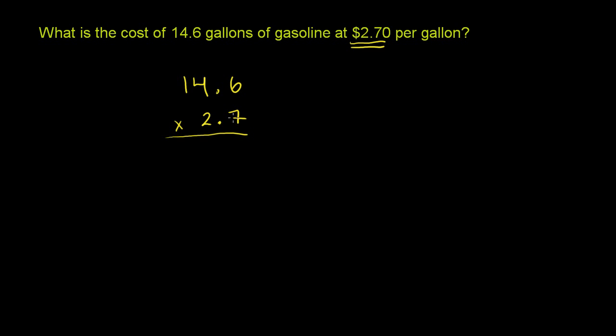So first we have, and just as a reminder, when you multiply decimals, you just have to treat the numbers like whole numbers and then worry about the decimals later. So right now we can just do this as 146 times 27, and then we'll worry about the decimals.